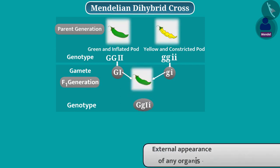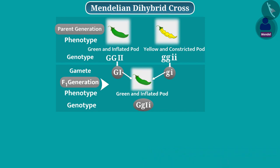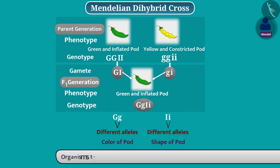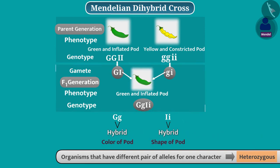The external appearance of any organism is called its phenotype. The phenotype of plants of F1 generation will have green colour and inflated shape of pods. In these plants, there are two different alleles for pod colour and pod shape. Organisms that have a different pair of alleles for one character are called heterozygous, also called a hybrid. Plants of F1 generation are heterozygous for two characters, and therefore are called dihybrid.